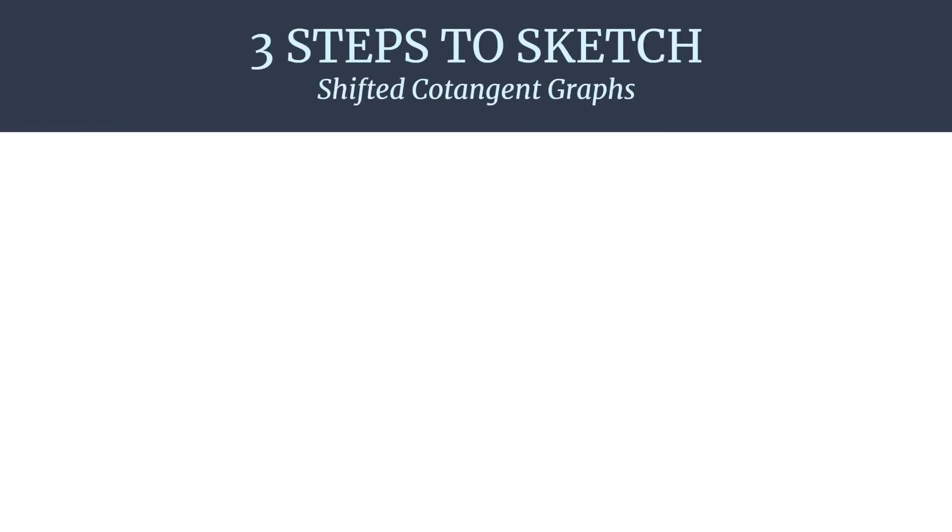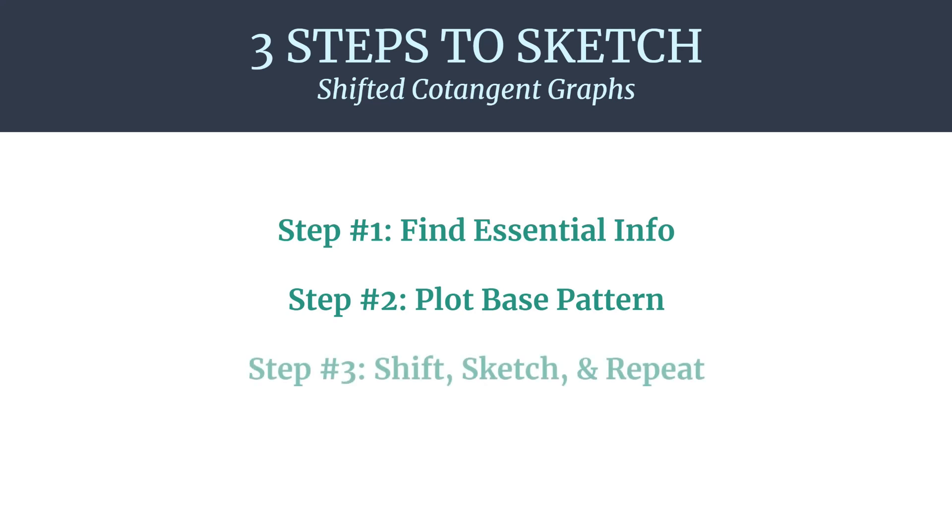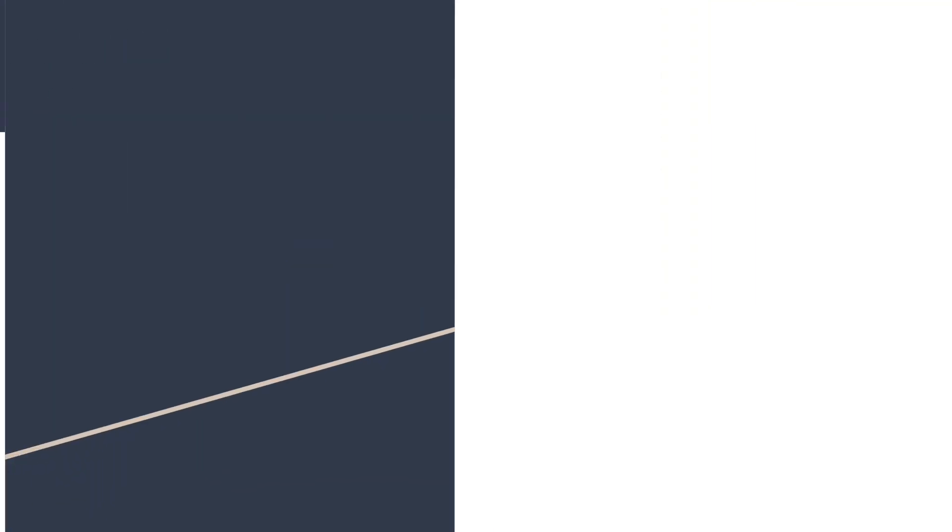So here are our three steps. First, we'll find all the essential information. This is really our step to get organized, do all of our analysis to make everything else easy for sketching the graph. In step two, we'll plot our base pattern, and we'll talk about what that looks like in just a moment. In step three, you'll apply the shifts, sketch in the cotangent curve, and then repeat it for as many cycles as you need. Now let's take a look at each of these steps in detail. At the end, I'll provide a template that you can use so that it is really easy to stay organized.